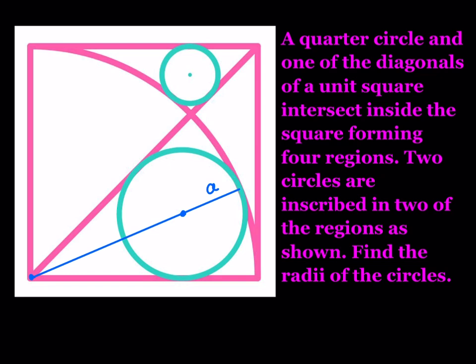Let's call the radius of the circle A. I'll drop a perpendicular here because that's also going to be my radius, A. The radius is perpendicular to the tangent line because that is a tangent line. Since the radius of the quarter circle is one — this is a unit square and the quarter circle is inscribed in that square, therefore its radius is one — from this point to that point, so since the radius of the quarter circle is one and I took out an A, this piece right here should be one minus A.